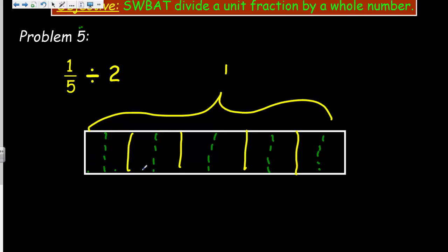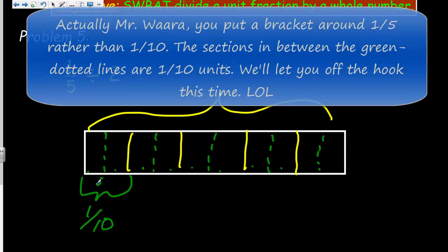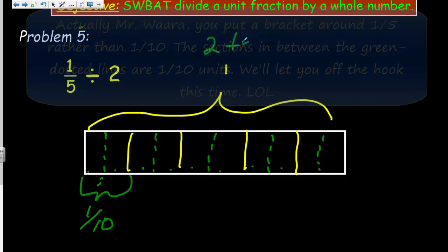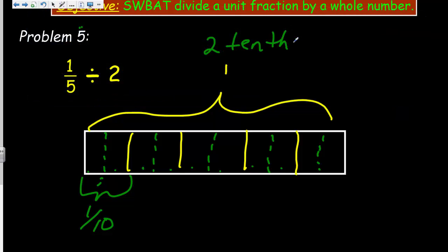And now our one fifth divided by two. You can see here becomes. We have one, two, three, four, five, six, seven, eight, nine, ten. So we end up with one tenth. So one fifth divided by two is one tenth. How many tenths are there in one fifth? There's two tenths in one fifth. Let's go ahead and write this down. Two tenths divided by two would be equal to one tenth.